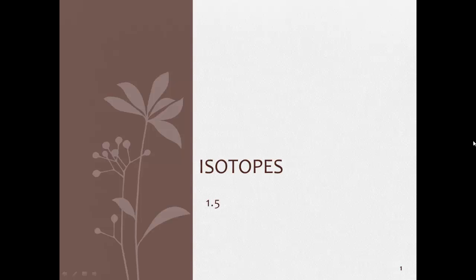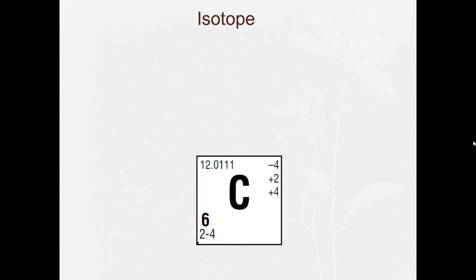Hi guys, welcome to our video 1.5, Isotopes. So what's an isotope? Well, an isotope is basically two different atoms that have the same number of protons, different number of neutrons.